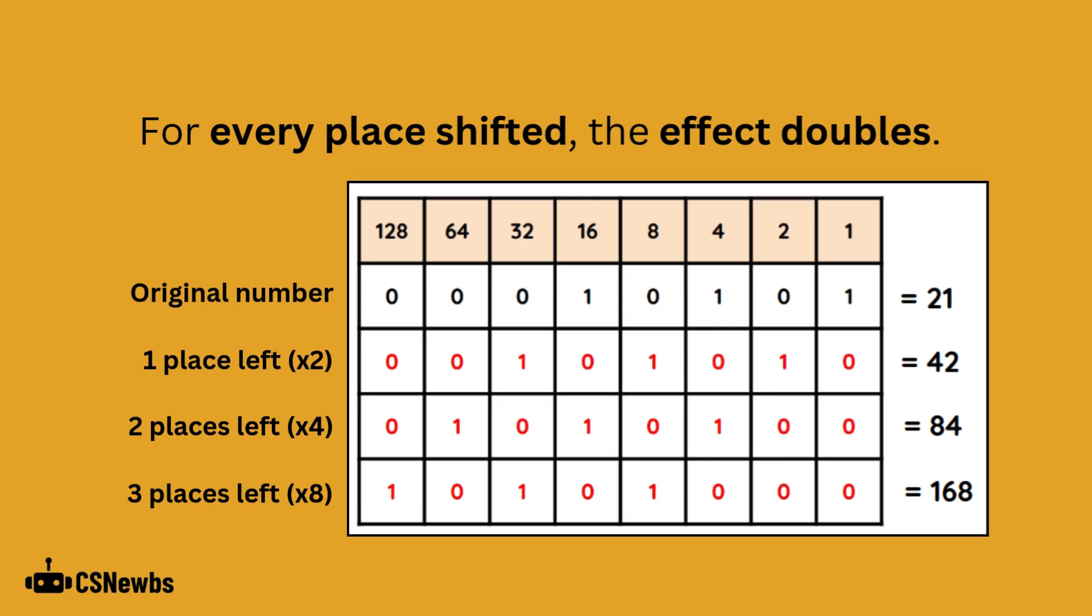In this example, 21 is the original number. This is then shifted one place to the left to multiply it by 2 to make 42. Two places to the left has an effect of multiplying it by 4 to make 84.